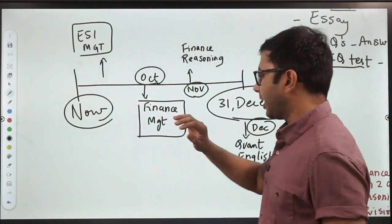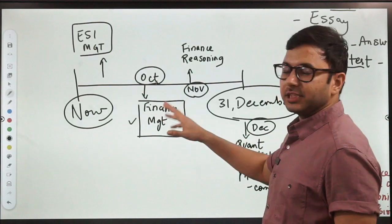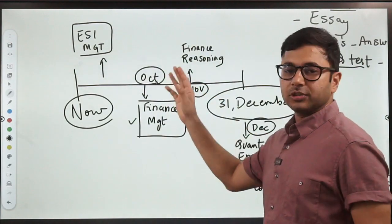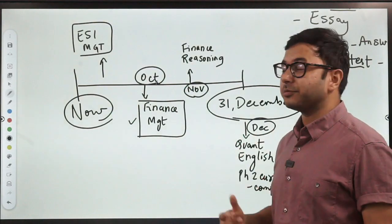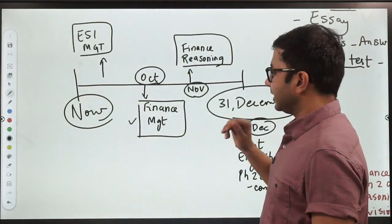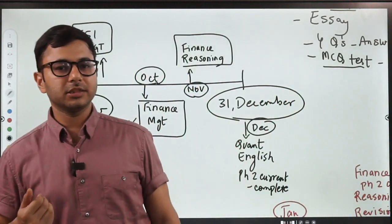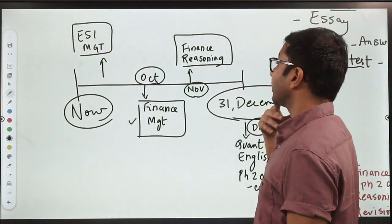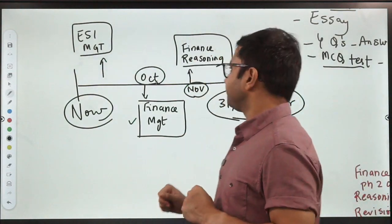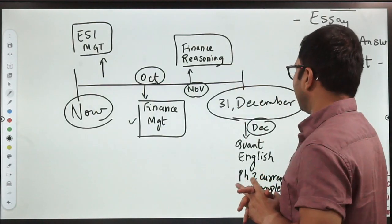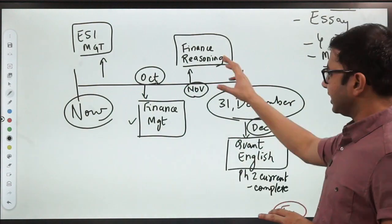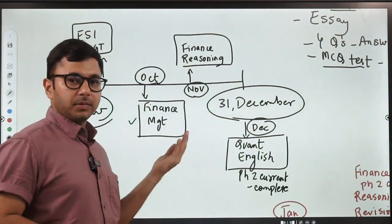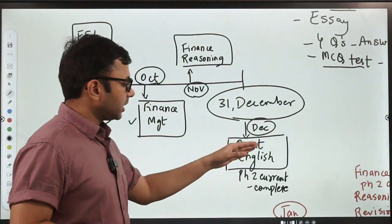In October, by September end, I'll be done with ESI. So, in October first week, I'll be starting with finance and management will continue. Management is expected to finish by October end. So, these two subjects we will cover in September and October. Now, you will realize you will have so much time to revise. In November, you can cover finance and reasoning because finance will not be done in a month. November will be spent on finance. Management is expected to complete by October end. So, you will have reasoning. You can start with reasoning because it's an important part in phase 1, 60 marks worth of weightage. In December, you start with quant and English. Reasoning will be covered in one month easily.